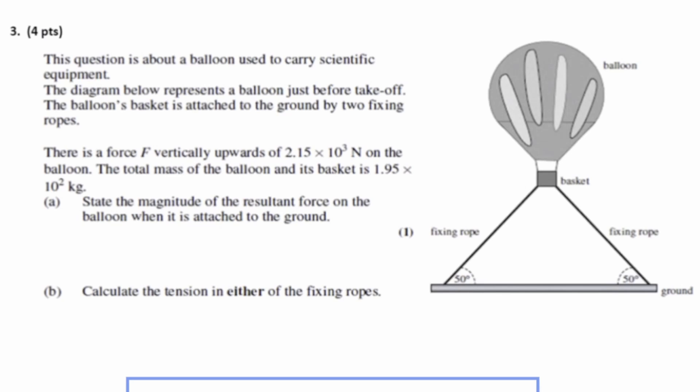And so the balloon's not moving, and we're given the force that's exerted on the balloon upward by the hot air inside of it, which is 2.15 times 10 to the third newtons, or 2150 newtons. And then we have the total mass of the balloon given as well. And we are supposed to state the magnitude of the resultant force on the balloon when it's attached to the ground, and also calculate the tension in either of the fixing ropes.